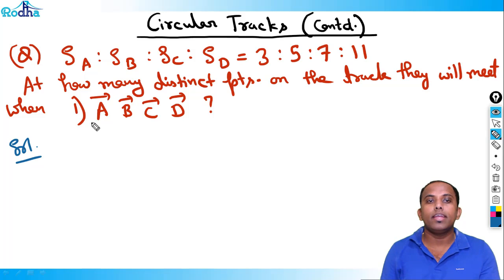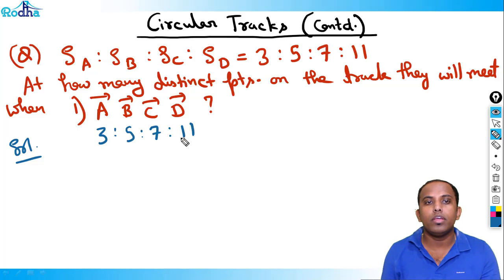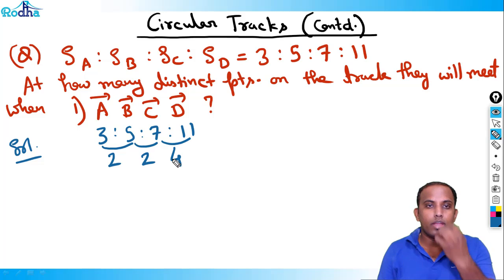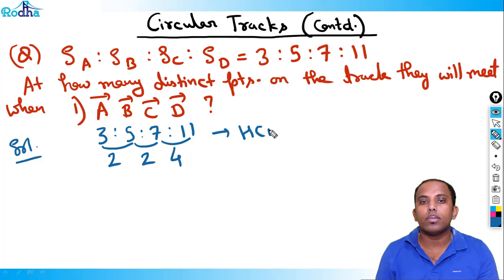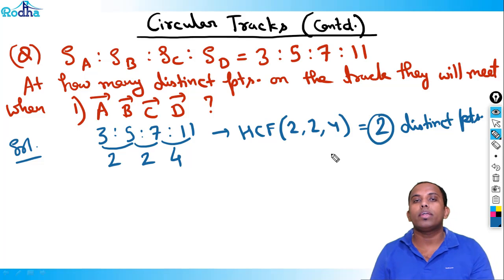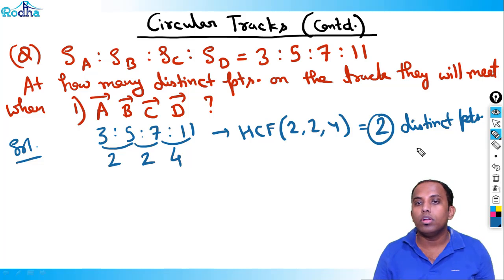When A, B, C, D are running in the same direction, speed ratio is 3:5:7:11. A and B meet at 5 minus 3 = 2 distinct points; B and C meet at 7 minus 5 = 2 distinct points; C and D meet at 11 minus 7 = 4 distinct points. The answer is HCF of 2, 2, and 4 = 2 points. When the answer is 2, one point is the starting point and the other is diametrically opposite.